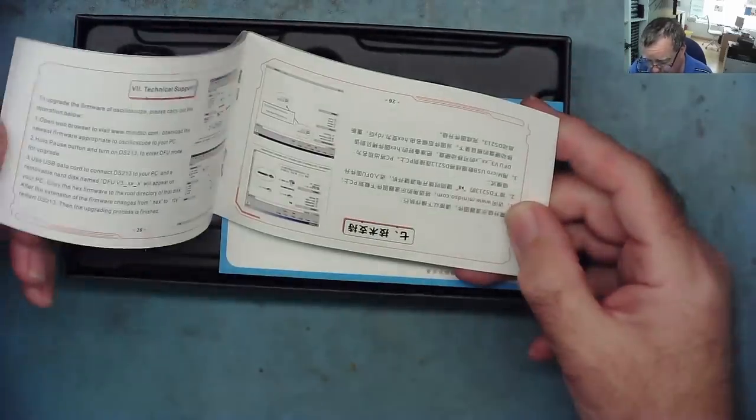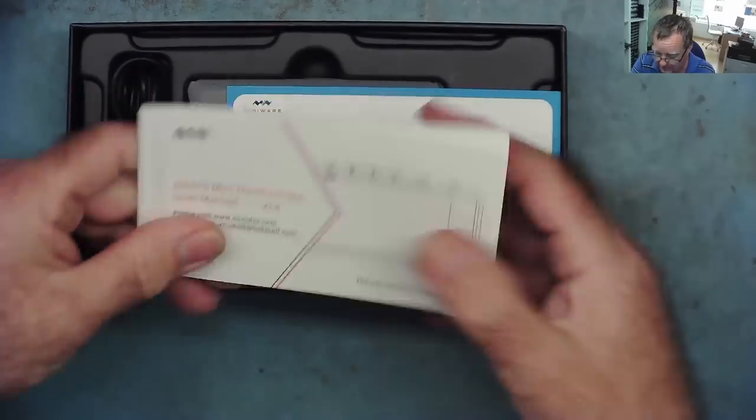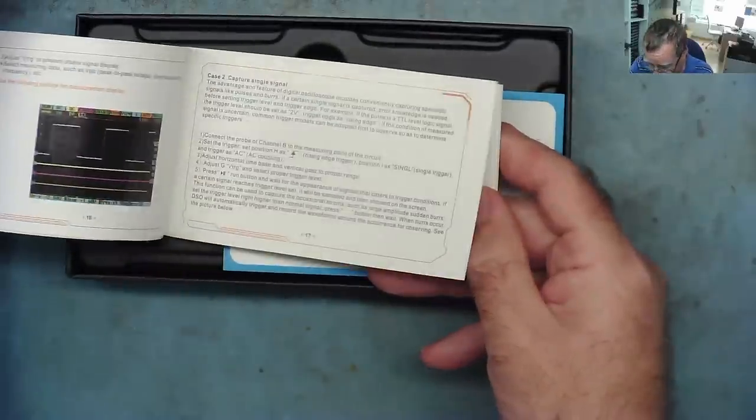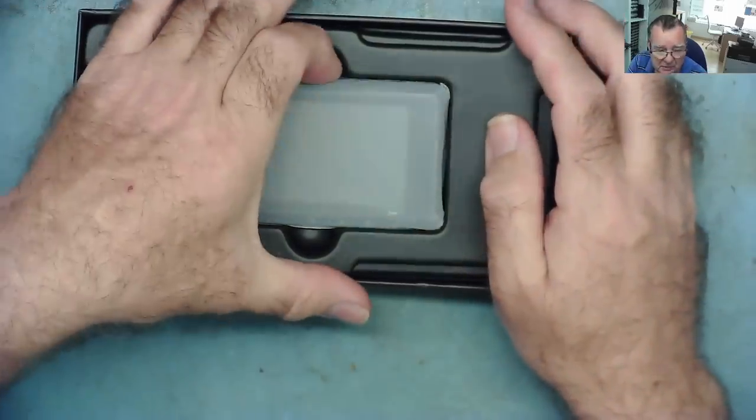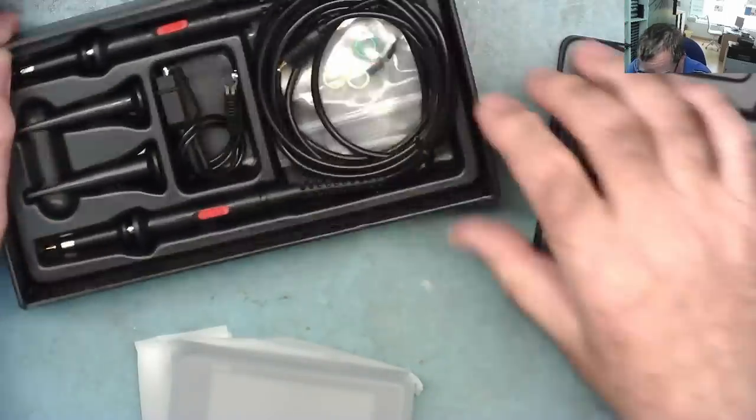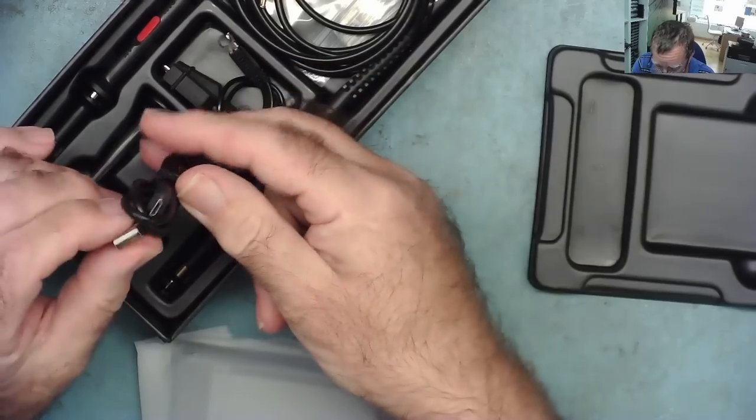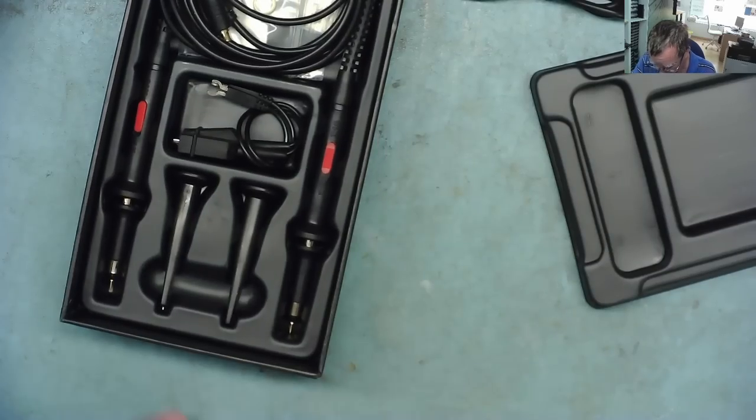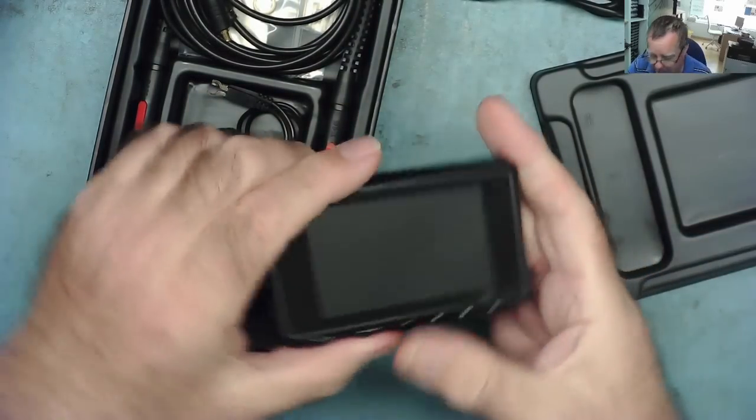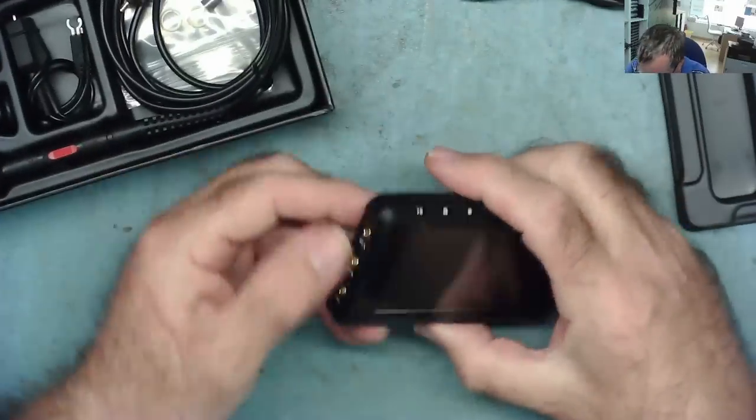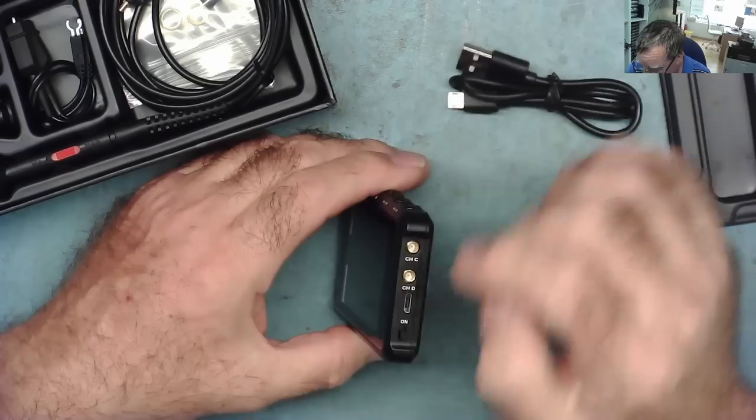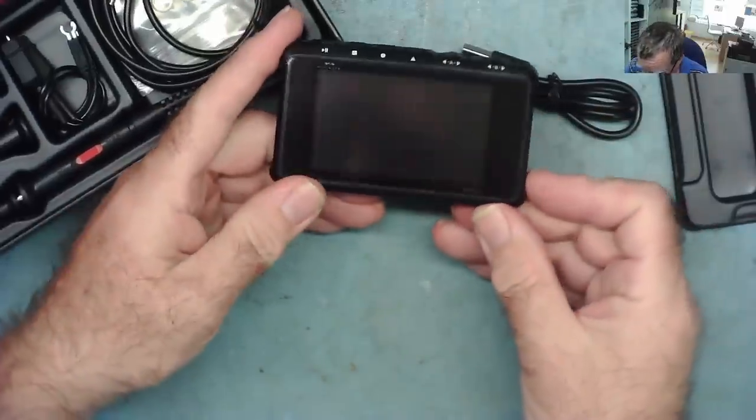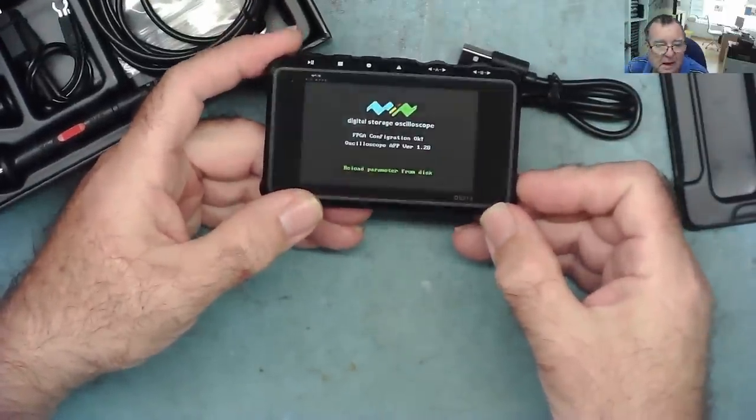We have the instruction book. It's like, that end's back to front, and it's in Chinese. And then this end is in English. I'm sure there are other language manuals available. Let's actually have a look at the oscilloscope itself, and there's some more bits in here. We have a USB lead, quite possibly for the power, but we can try to attach it to a PC.